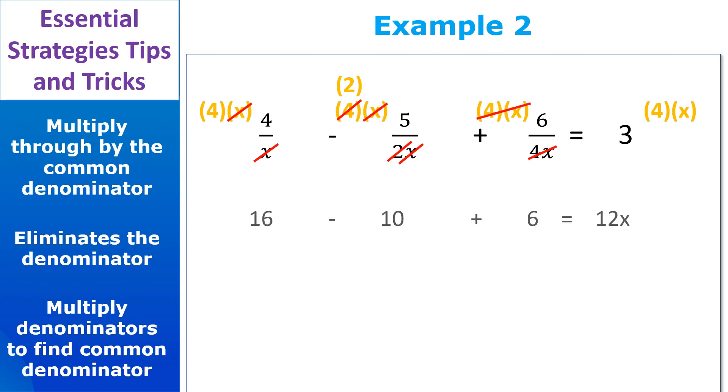Now this becomes pretty easy. 4 times 4 is 16 minus 2 times 5 is 10 plus 6 because we had 6 left over on the third term equals 12x. And notice, we don't have a denominator in sight. So solving this is a breeze. We get 12 equals 12x, x equals 1. Okay, great job.